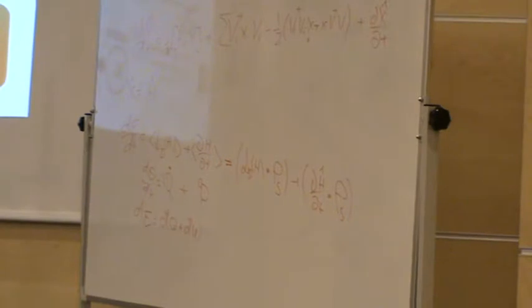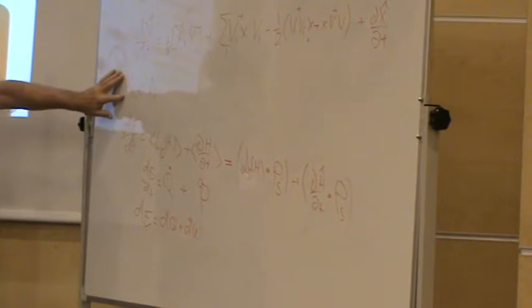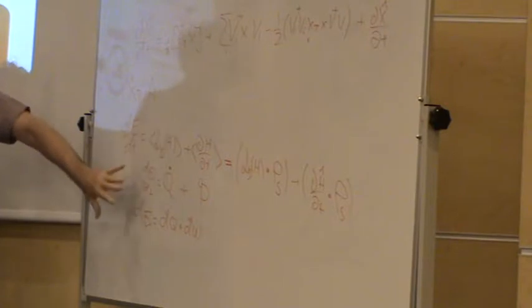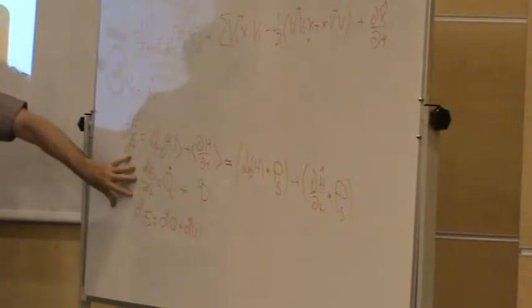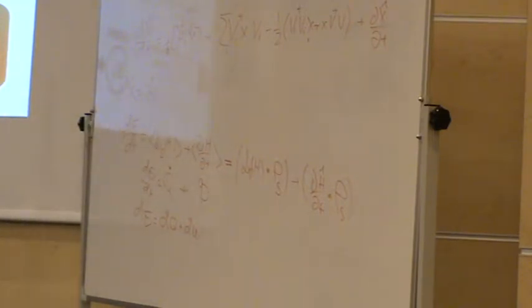Starting from Lindblad, going to the Heisenberg picture, and setting our operator of interest to be the Hamiltonian itself, we get the time derivative of the first law of thermodynamics. So our theory is consistent with the first law of thermodynamics. This looks very nice.